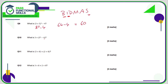Question 10: we have brackets, and inside the brackets we have indices, so we do 5 squared first — 5 times 5 is 25. The question is now 3 plus (25 minus 4). Inside the brackets we consider the order of operations: 25 take away 4 is 21. So 3 plus 21 is 24.